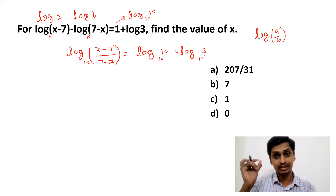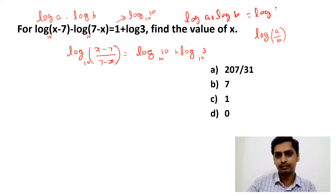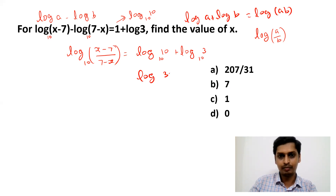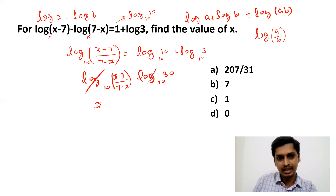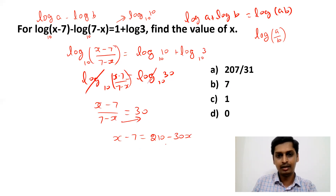Using log a + log b = log(a × b), the right-hand side becomes log(10 × 3) = log 30 to base 10. So log((x−7)/(7−x)) = log 30. Cancelling the logs: (x−7)/(7−x) = 30, so x − 7 = 210 − 30x. Bringing terms together: 30x + x = 210 + 7, giving 31x = 217.